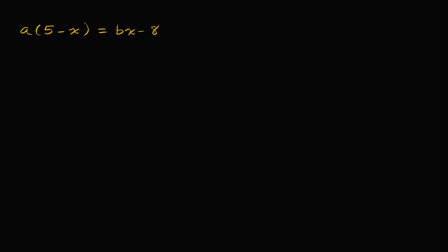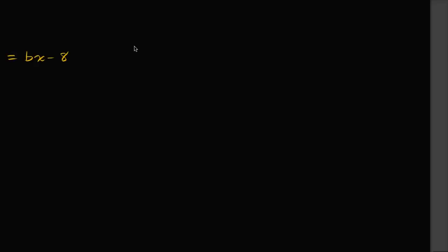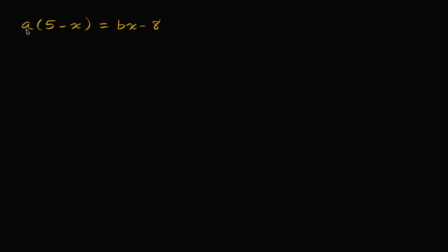So here we have another equation: a times the quantity five minus x, is equal to bx minus eight. Pause the video and see if you can solve for x. The way I like to approach these is to expand everything out. I'm going to distribute the a, collect all the x terms on one side, and all of the non-x terms on the other side — essentially the same approach as the last example.